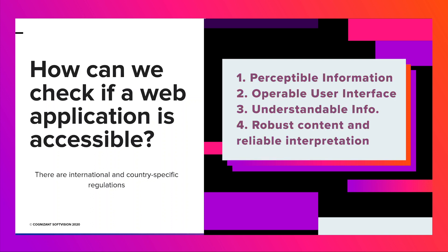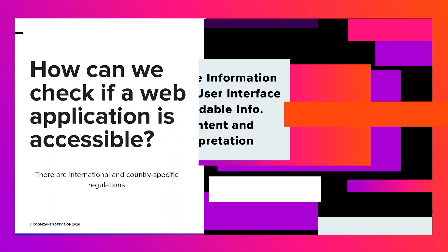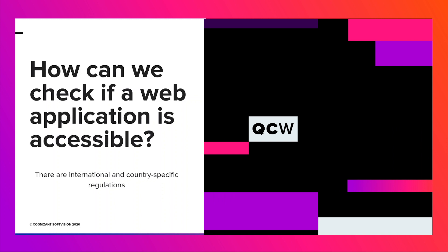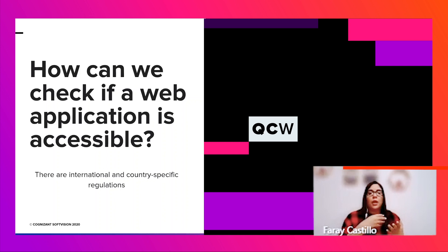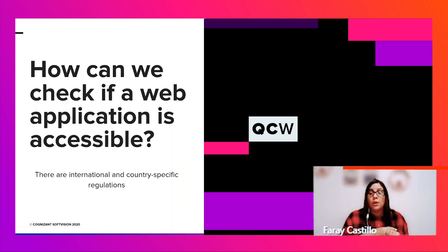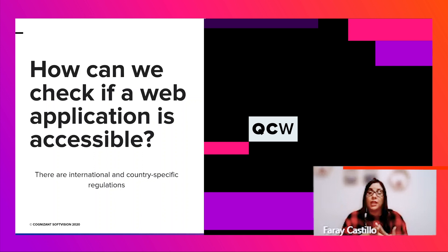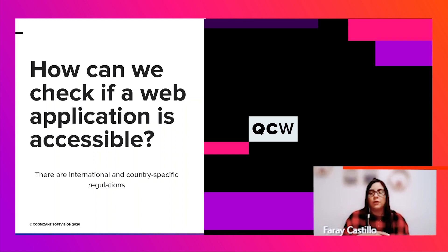And number four, robust content and reliable interpretation — it must be compatible with older, newer and more accessible technologies. From these four major principles, guidelines from each category emerge that are possible to measure according to three conformance levels: A, AA, and AAA. AAA is the maximum level, meaning that if a website has AAA level of accessibility, it covers a greater number of users than one with level A.